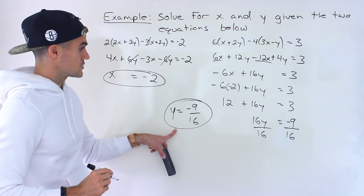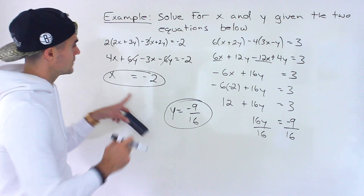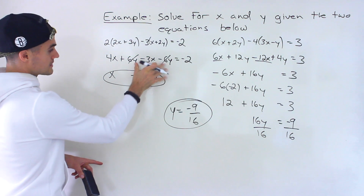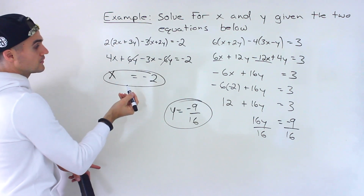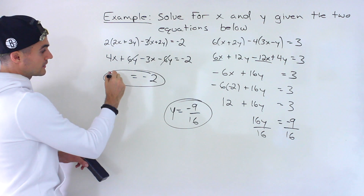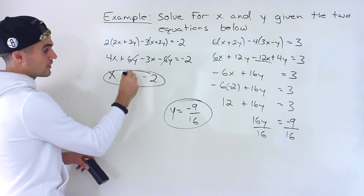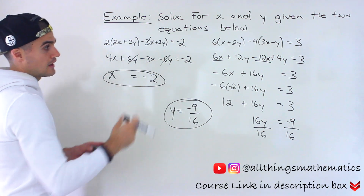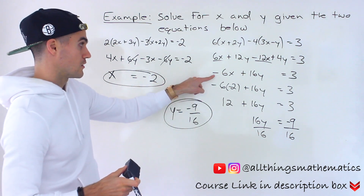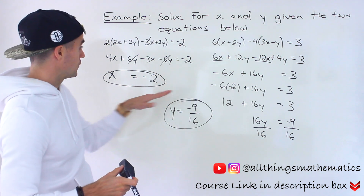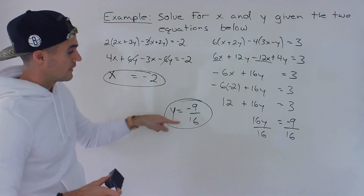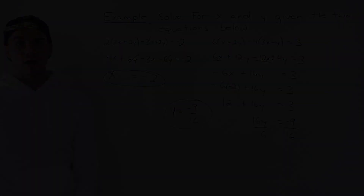So those are the two solutions: x = -2 and y = -9/16. We got lucky here that the y terms cancelled out in the first equation giving us x directly. That won't always happen — you may end up with an expression like x plus something·y = -2 and need to do full substitution or elimination. But here we got x right away, plugged it in, and solved for y.